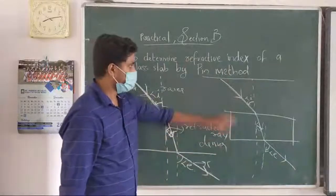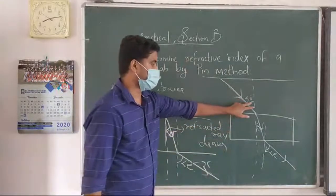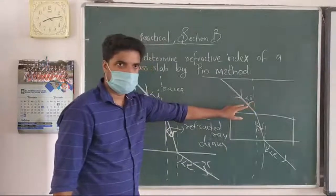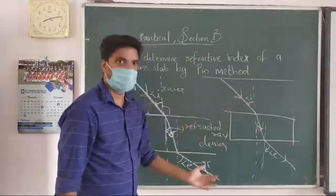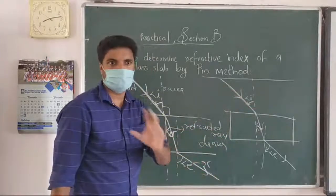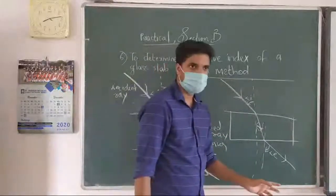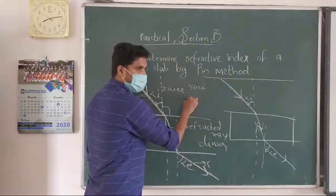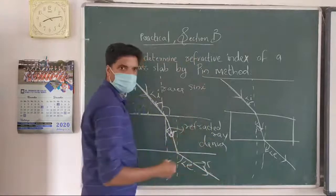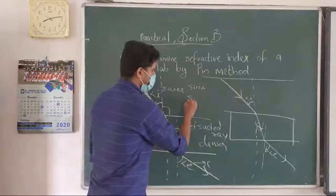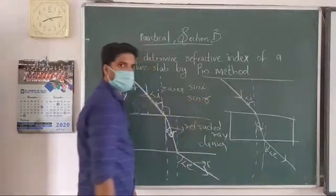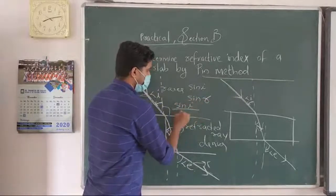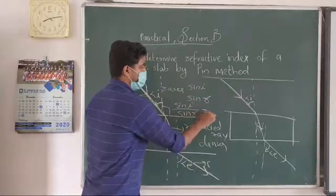Your experiment will be: first draw a number of incident angles, then find out the refracted angle — you can measure with a protractor. After that find sine i using a log table, then find sine r using a log table. Then sine i divided by sine r gives you the refractive index n2 of the medium. Take incident angles of 20, 25, 30, 40, 50 degrees — five or six steps — in one paper itself. You can mark different incident angles and find out the corresponding refracted angles.